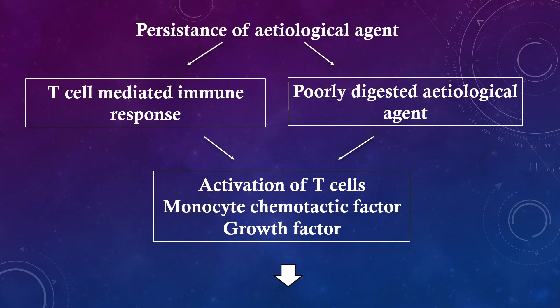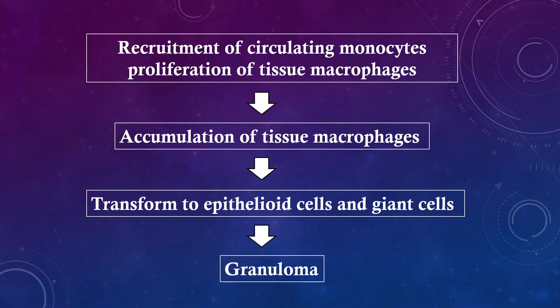This is followed by activation of T cells, monocyte chemotactic factor, and growth factor, followed by recruitment of circulating monocytes and proliferation of tissue macrophages, followed by accumulation of tissue macrophages, which are then transformed into epithelioid cells and giant cells, leading to formation of the granuloma.